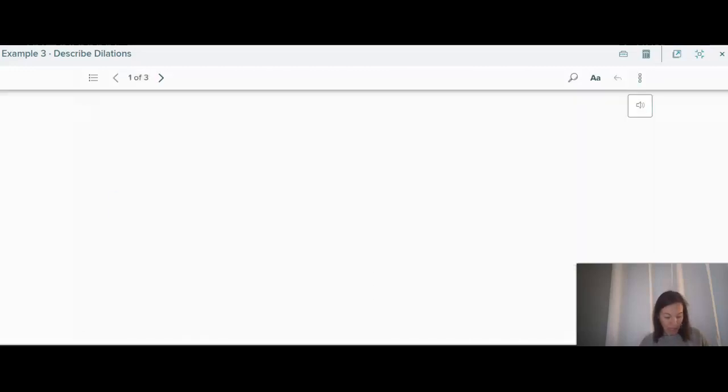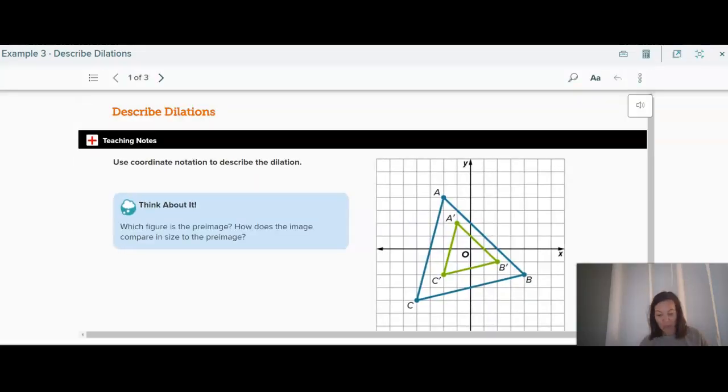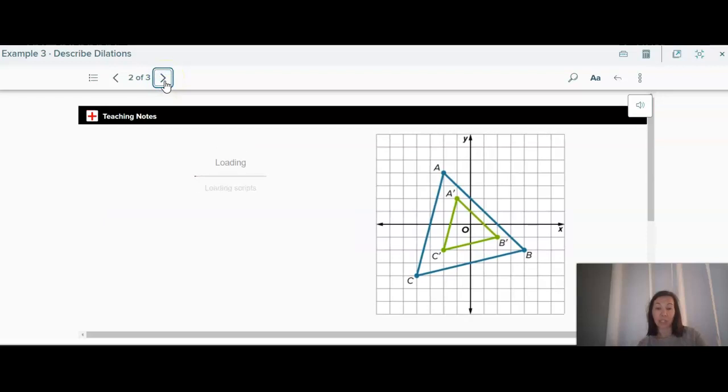So the last one, the last thing you're going to have to do is describe the dilation. So if you go to page 470, example 3, we want to know, first of all, the pre-image is this one in blue, and then the image is this one here. So before we do anything, you guys should be able to figure out that the scale factor is a number smaller than 1 because my image is smaller. So it's a reduction, not an enlargement. So that means that the scale factor is going to be smaller than 1.